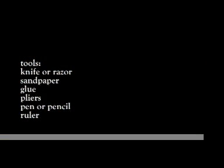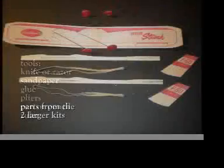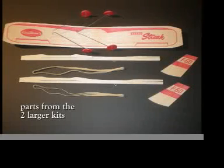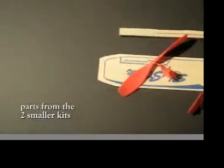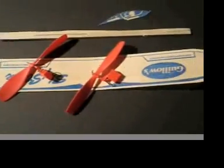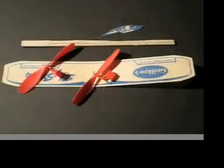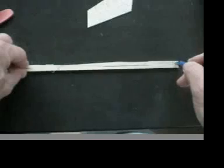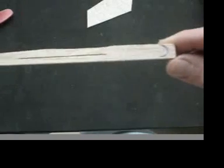The only modifications from the actual kits are fairly simple ones. You want to take one of the fuselages from the smaller aircraft and that'll become the center fuselage that houses the pilot's cockpit. You want to mark it in the front and just before the clip in the back that holds the rubber band in place.